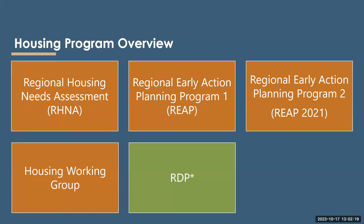SCAG's housing program is made up of five main core components: the Regional Housing Needs Assessment (RHNA), the Regional Early Action Planning Program 1.0 (REAP 1.0), the Regional Early Action Planning Program 2.0 (REAP 2.0), the Housing Working Group, and the RDP, which contains some housing-related tools that can be used.